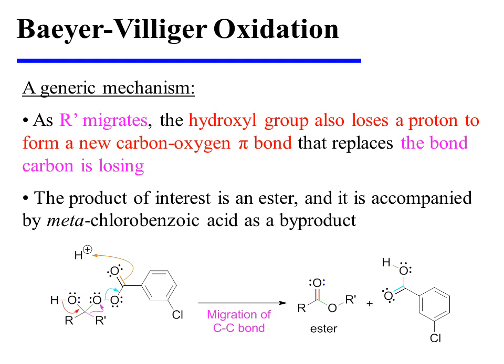As this happens — as R' is migrating — the hydroxyl group also loses a proton to form a new carbon-oxygen pi bond that replaces the bond that carbon is losing.